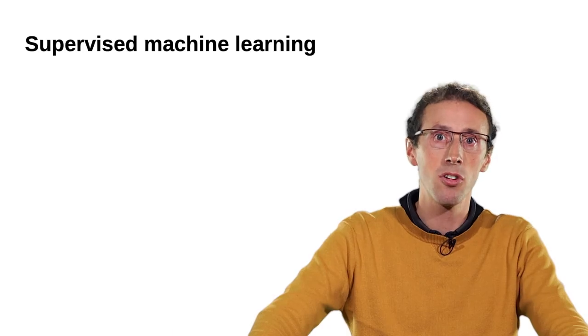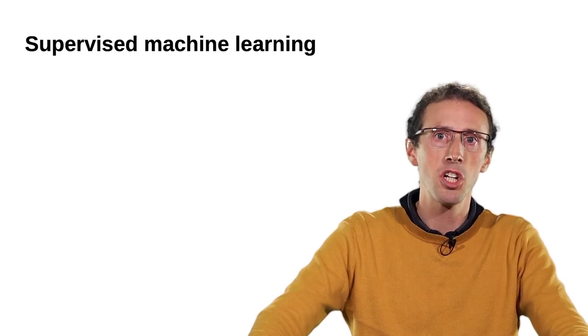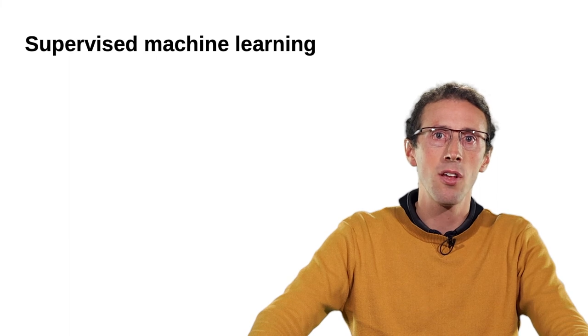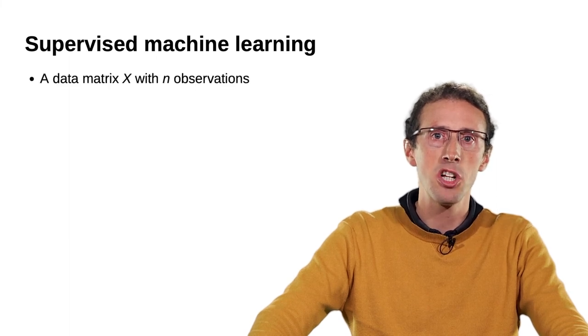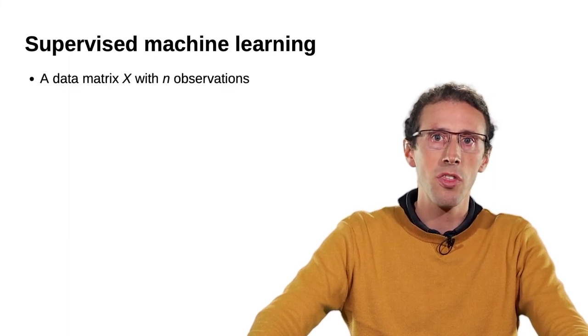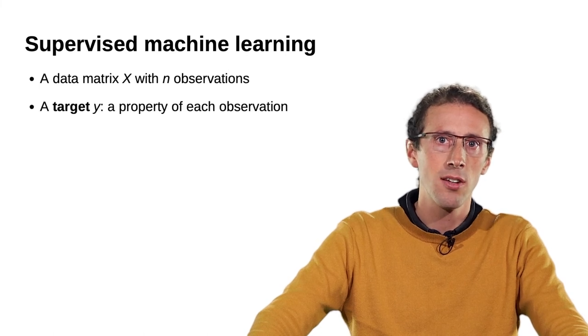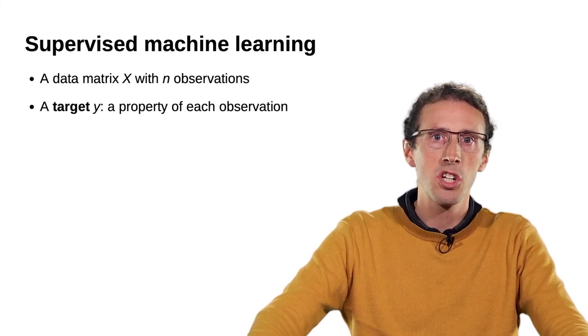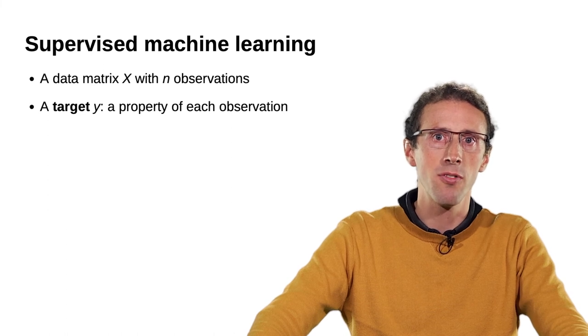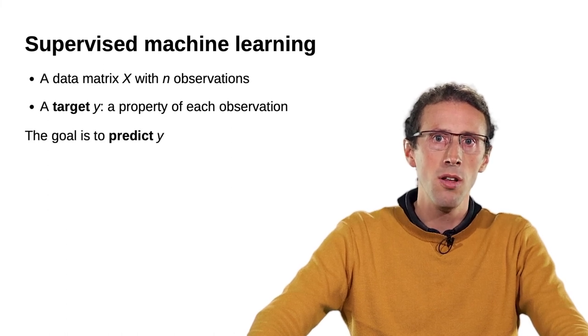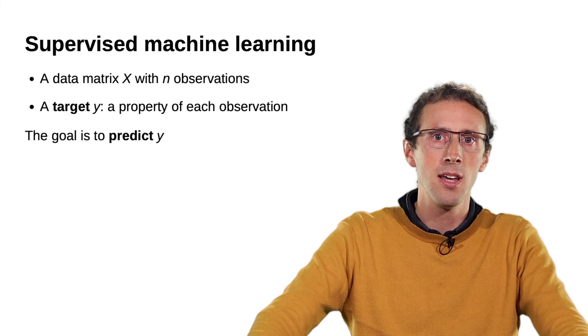In mathematical terms, for supervised machine learning, we are given a data matrix that we shall denote X with n observations, and a target, Y, which gives a characteristic for each observation. The goal of supervised machine learning is to predict Y from X.